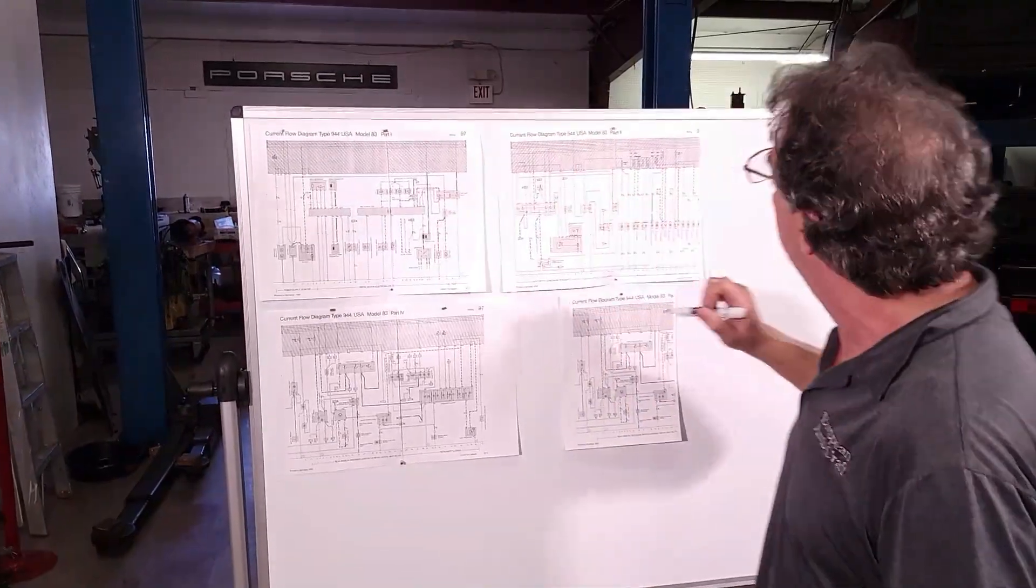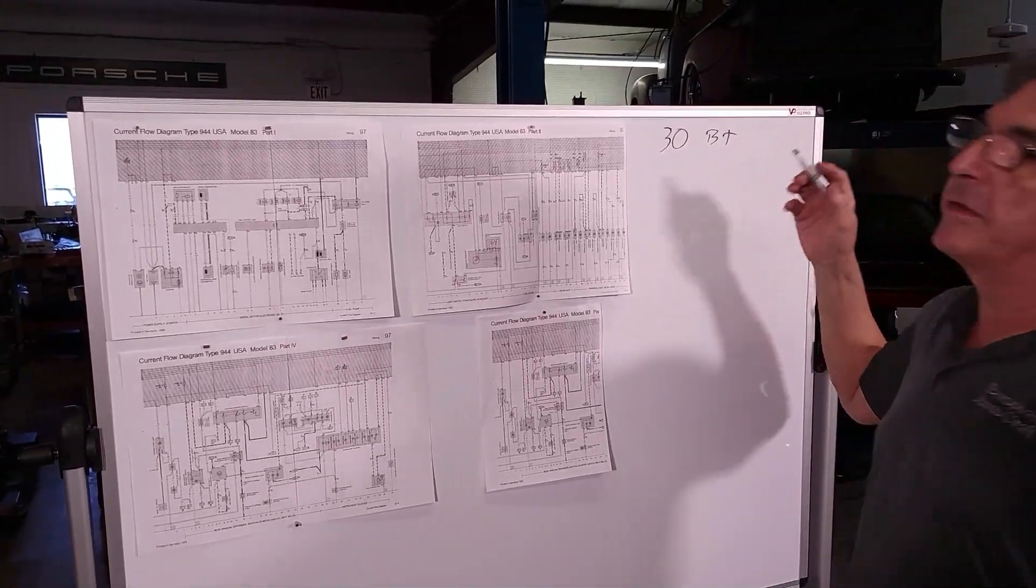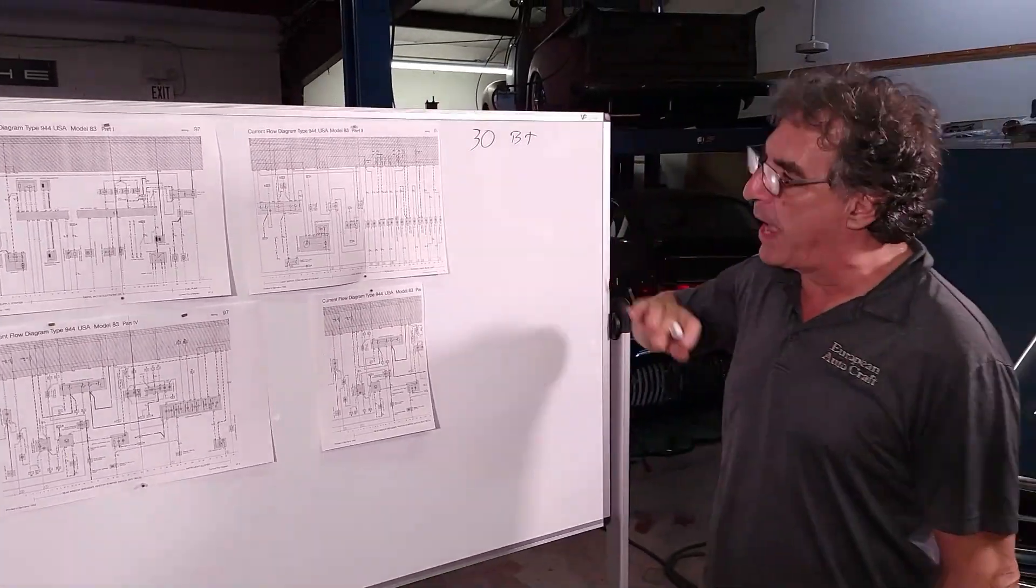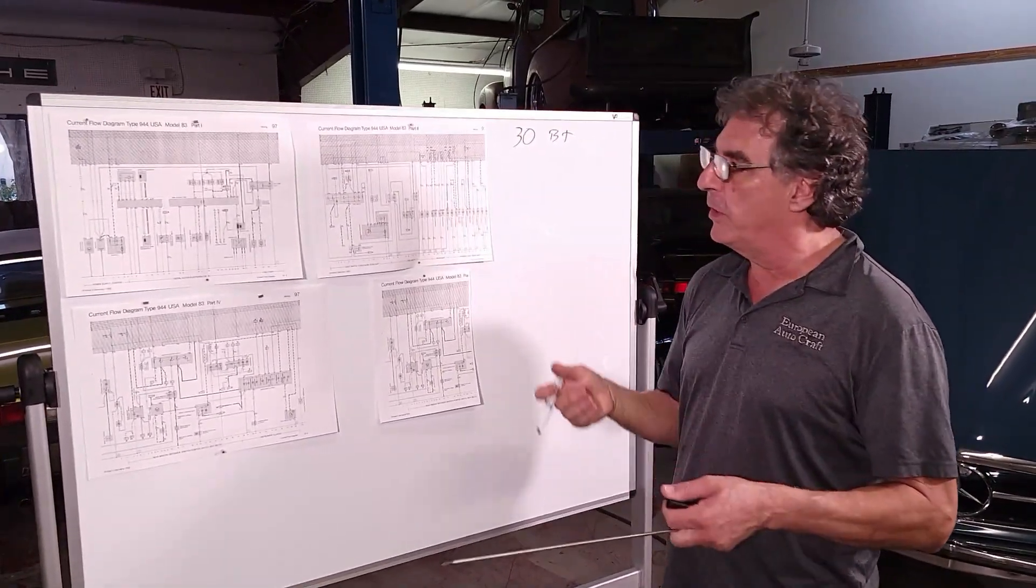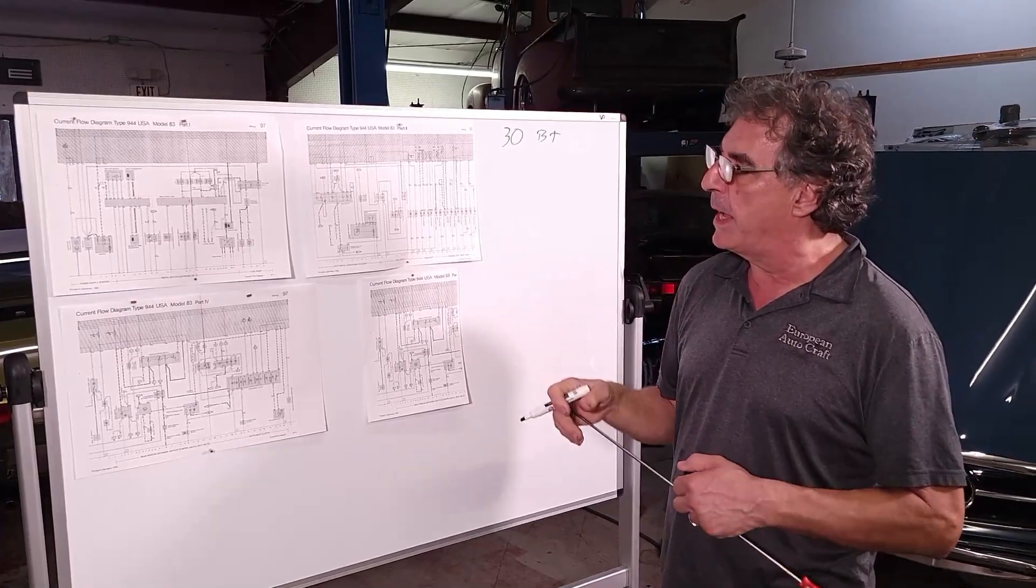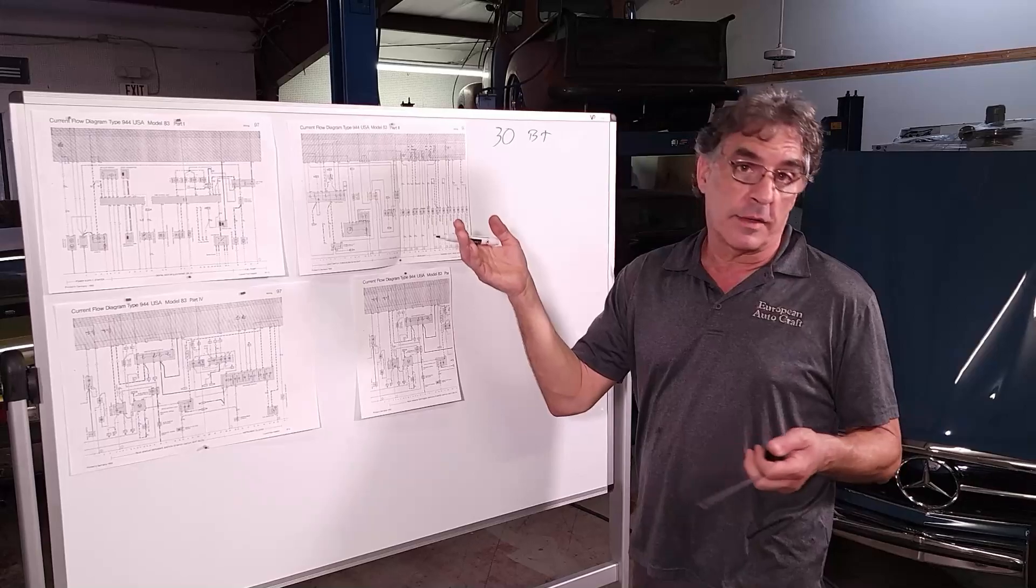On the first row you see 30. 30 is going to be B plus, it's going to be live all the time. That's battery on power all the time, like for your radio memory or seat memory. These cars really didn't have seat memory back then, but anything that requires power all the time. The clock, for example.